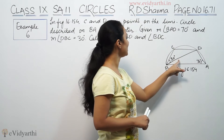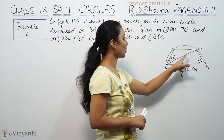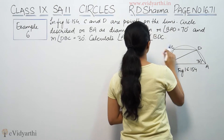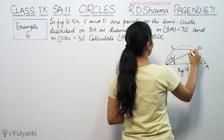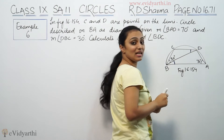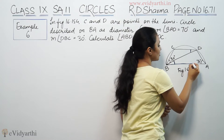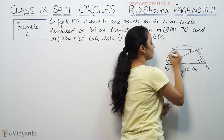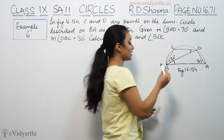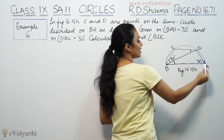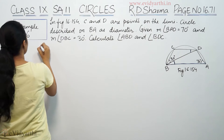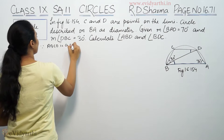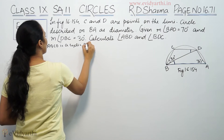We have to calculate angle ABD and angle BDC. If you see, this is one diameter, so A, C, D — ABCD forms a cyclic quadrilateral, because all points lie on the circle.